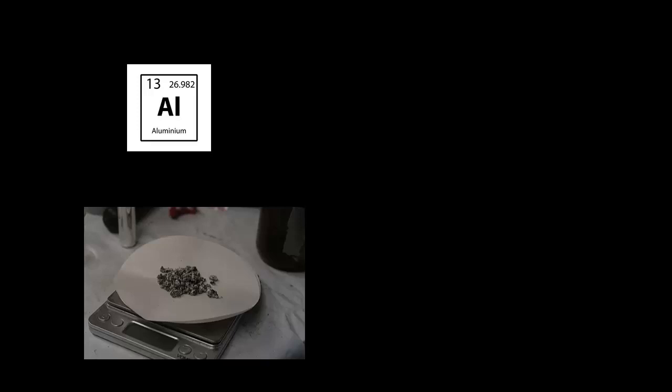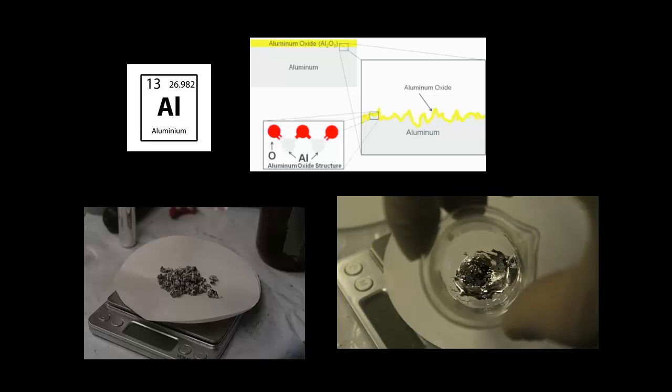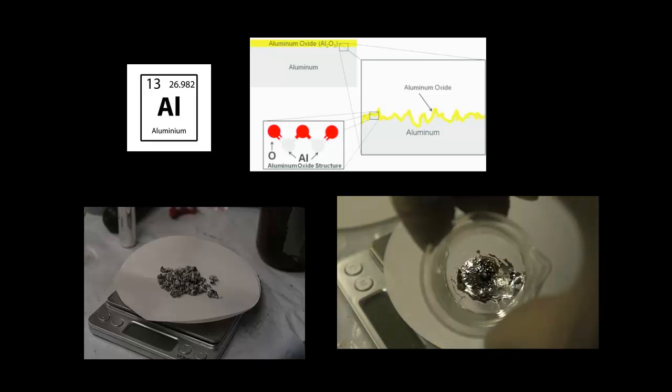Aluminum is quite resistant to corrosion because of the effects of passivation. In this video we're going to take a look at the passivation effect and how to interrupt it by introducing a gallium-based alloy into the aluminum matrix.